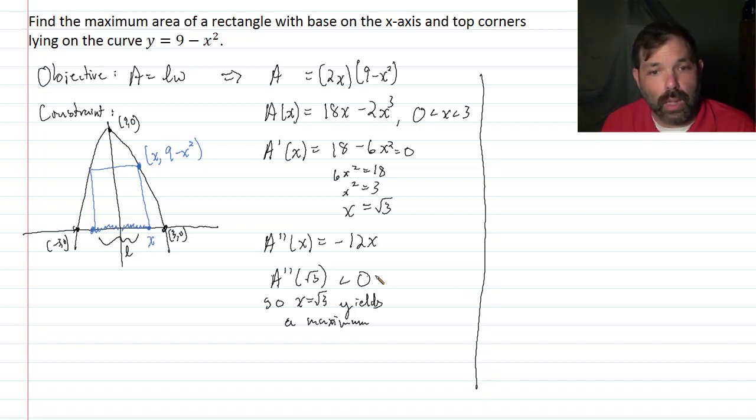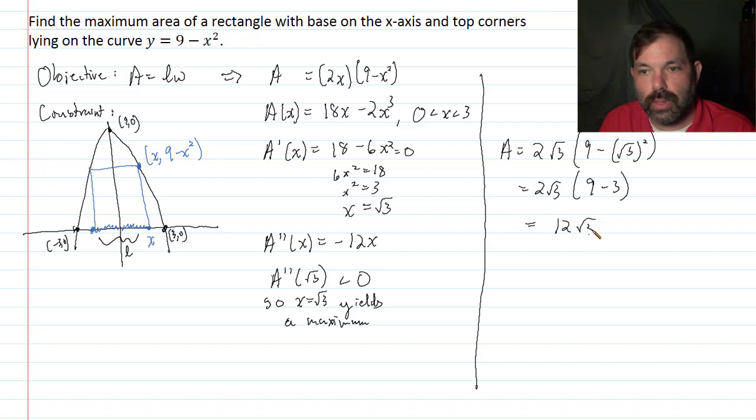All right, conclusion. So I know that x equals square root of 3 gives me the maximum area. And the area is 2 times the square root of 3, times 9 minus the square root of 3 squared. So that's 2 root 3 times 9 minus 3. 9 minus 3 is 6. So that's 12 root 3 square units is the maximum area of the rectangle under the curve 9 minus x square.